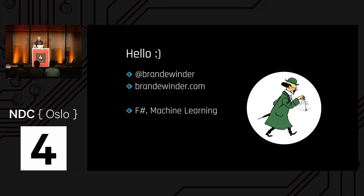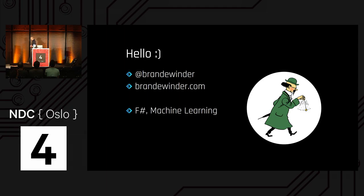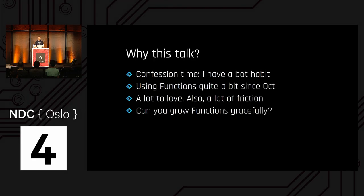My name is Matthias Brandewender — you can find me on Twitter and on the internet. The two topics I usually talk about are F# and functional programming on one side, and machine learning and forecasting on the other. I'm French, living in San Francisco for a while, though since America started being great again I've been advertising my French side a bit more.